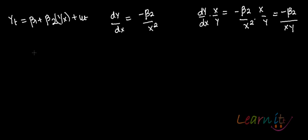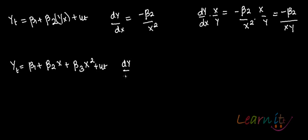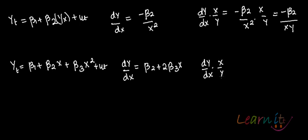If you have the quadratic model yt = β1 + β2*x + β3*x² + ut, you have to find out dy/dx, which will be β2 + 2β3*x. And elasticity, (dy/dx) * (x/y), is (β2 + 2β3*x) * (x/y).